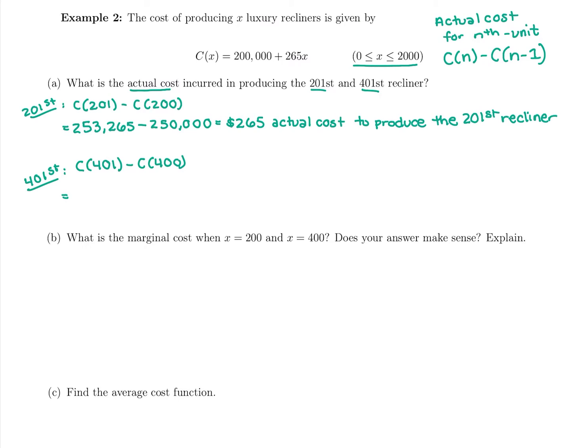So for plugging in 401 you should get $306,265, that's the total cost for all 401 recliners to be built, minus plugging in the total cost for all 400 is $306,000 even. So what it's costing them for that one extra is $265 again.